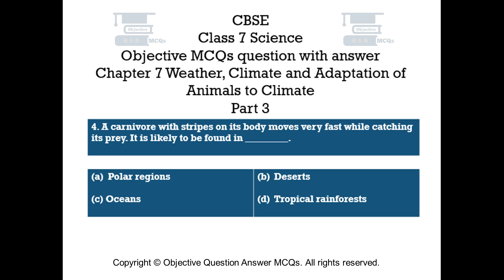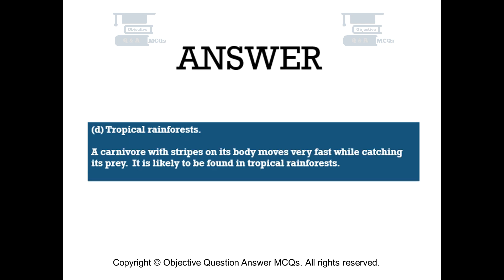Question number 4. A carnivore with stripes on its body moves very fast while catching its prey. It is likely to be found in: Option A: Polar Regions. Option B: Deserts. Option C: Oceans. Option D: Tropical Rainforests. The right answer is Option D — Tropical Rainforests. A carnivore with stripes on its body that moves very fast while catching its prey is likely to be found in tropical rainforests.